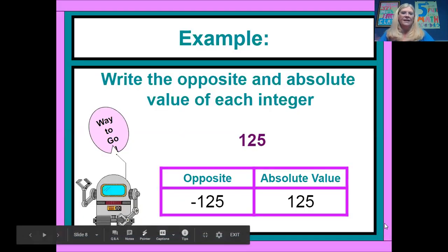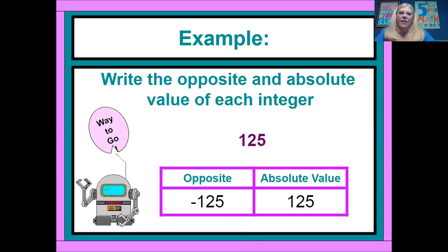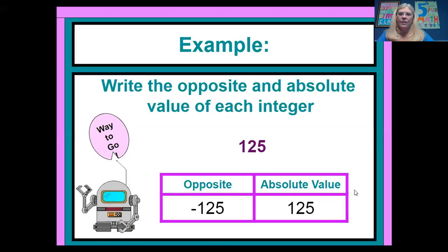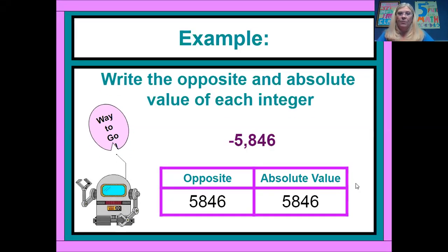So let's look at an example here. To write the opposite and an absolute value of an integer. You've got the integer here, 125. Its opposite is negative 125. Its absolute value is 125. Here is another example. The opposite of negative 5,846 is, I'm sorry, 5,846. And its absolute value would be a negative.